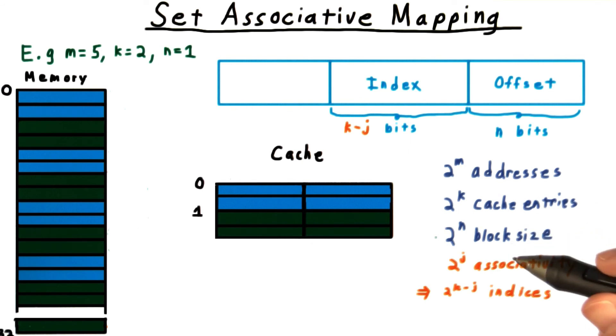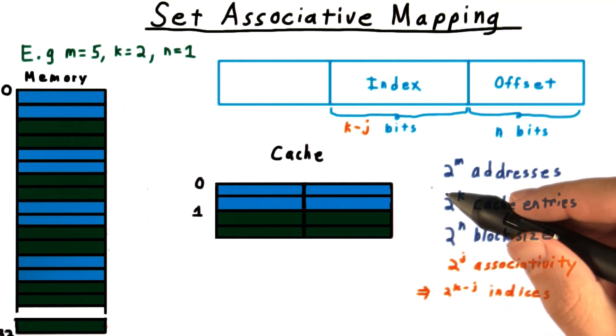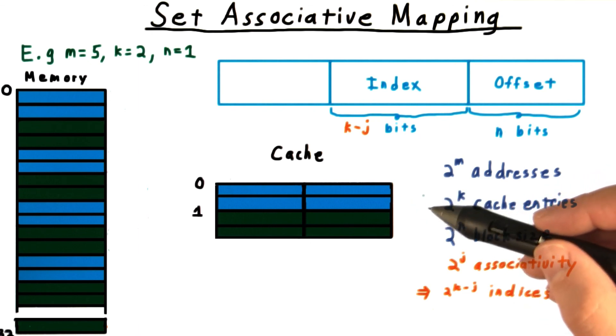This greater associativity also gives the cache some choice about replacement. Whereas with the direct map cache, there was only one block in the cache where the data could be stored, we now have a set of possible locations, just two in our example, but maybe more. Typically, we choose to evict the entry that was least recently used.